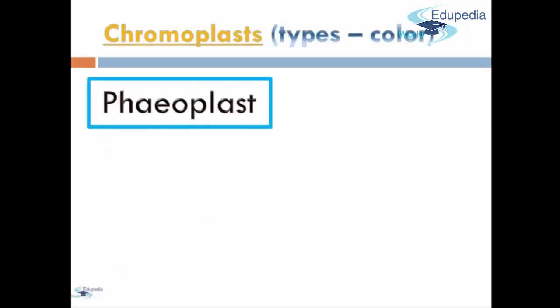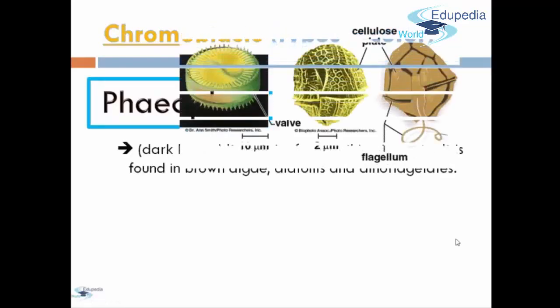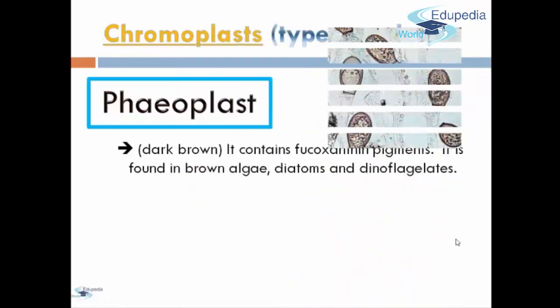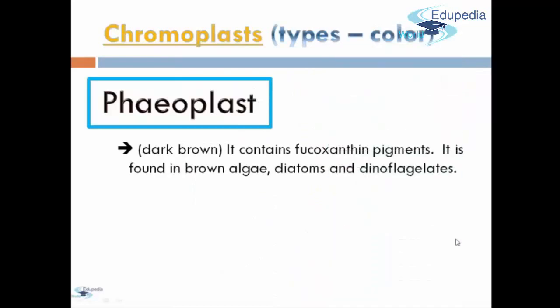The second type of Chromoplasts is Phaioplasts. It is dark brown in color, and it contains fucoxanthin pigment, and it is found in brown algae, diatoms, and dinoflagellates.